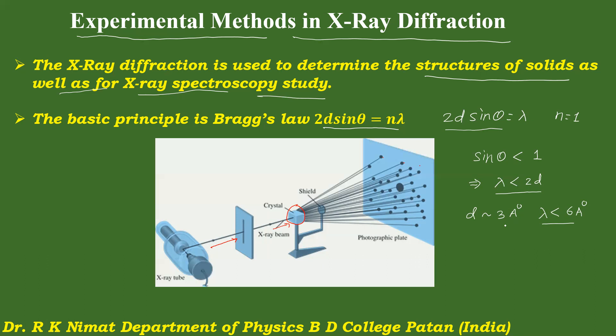If you select X-rays of shorter wavelength, they will be diffracted through very small angles which are too small to be measured experimentally. However, if you select X-rays of longer wavelength, these X-rays are unable to resolve the details of the structure on the atomic scale. Hence, proper selection of the wavelength of X-rays is very important.